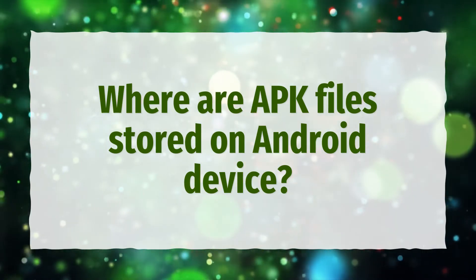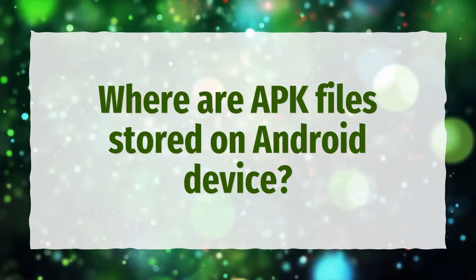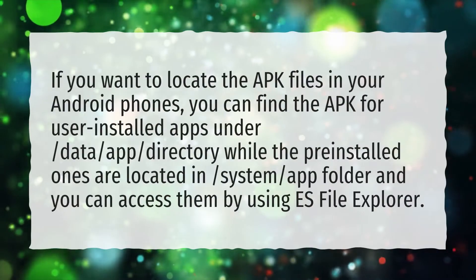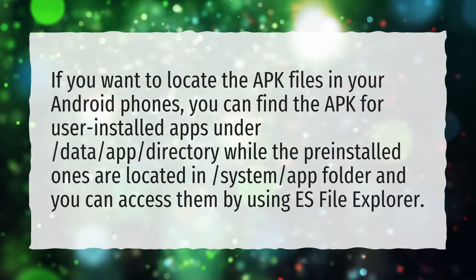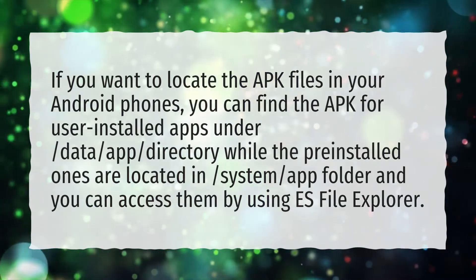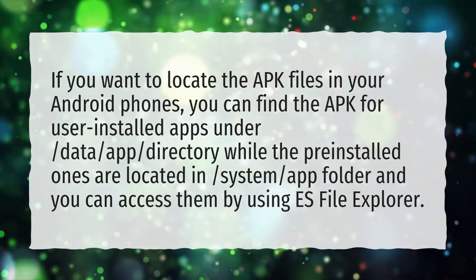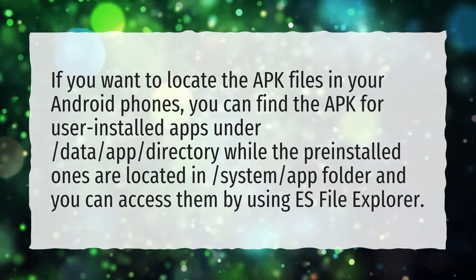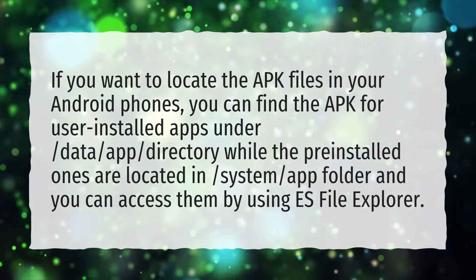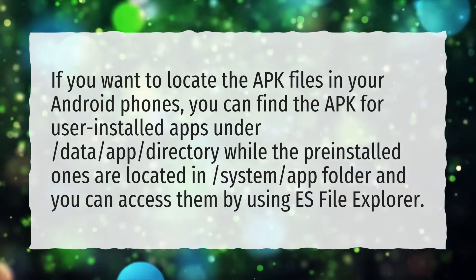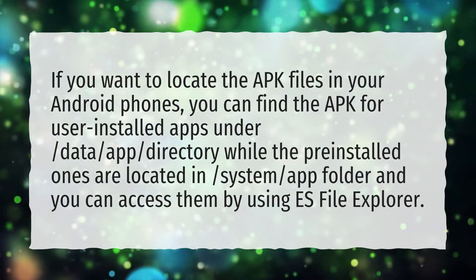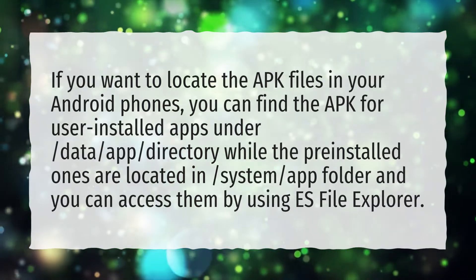Where are APK files stored on Android device? If you want to locate the APK files in your Android phones, you can find the APK for user installed apps under Data, App, Directory, while the pre-installed ones are located in System, App folder and you can access them by using S File Explorer.